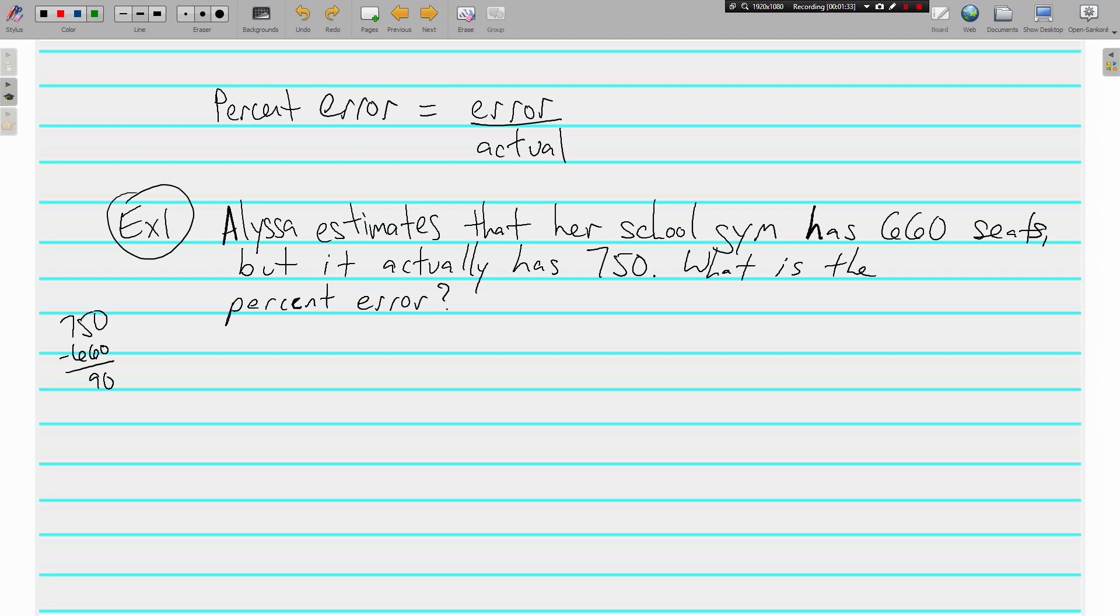Her error, she was off by 90. Divided by the actual amount, which was 750. 90 divided by 750, just throw it in the calculator and you get 0.12. But we need to multiply that by 100 because we are looking for a percent. So Alyssa was off by 12%. She had a 12% error.